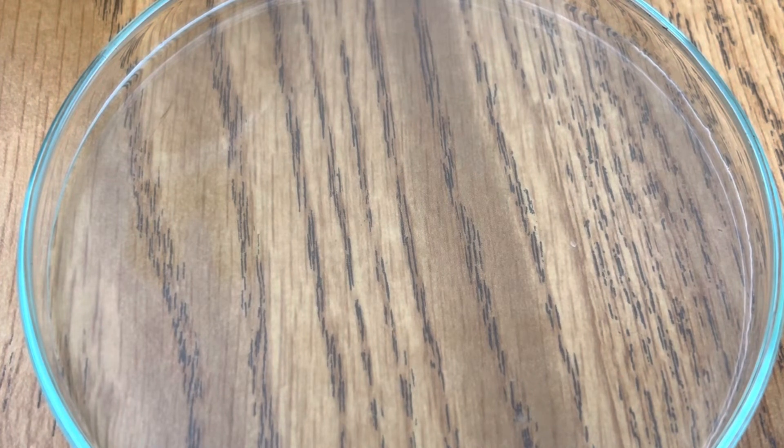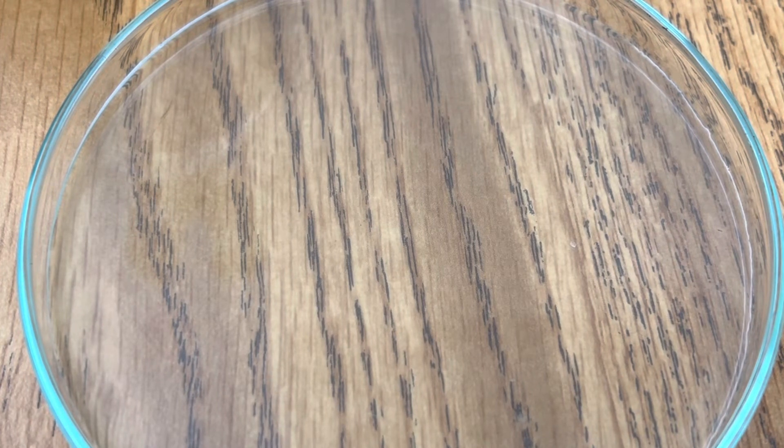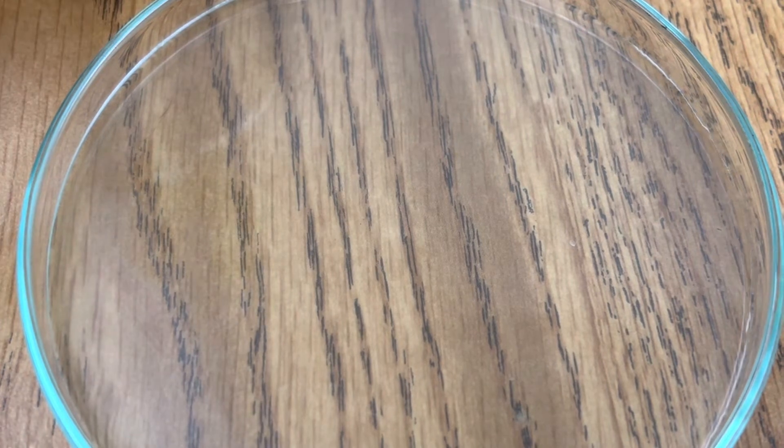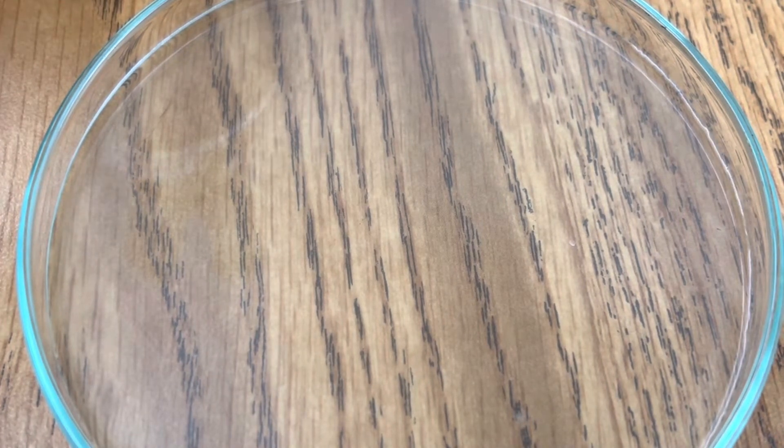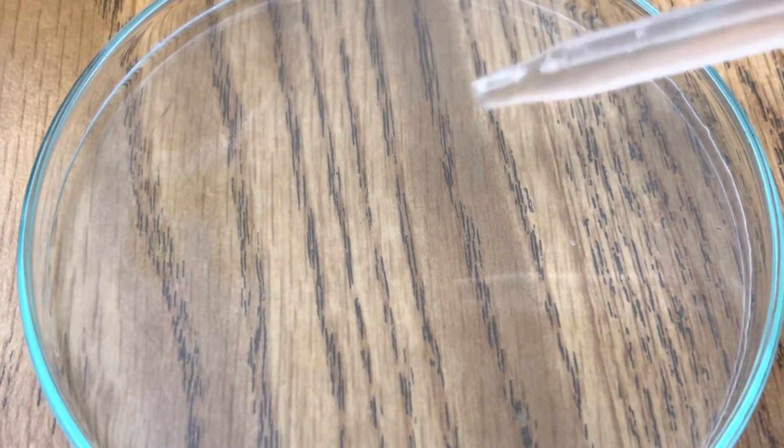Once you have an aqueous solution of barium chloride, you're ready to add drops of sulfuric acid to your petri dish, and you will see the precipitation of barium sulfate, a white, cloudy precipitant. Here we go.